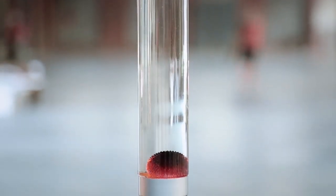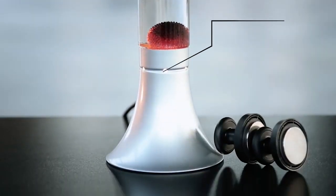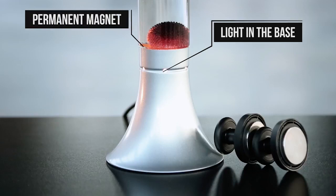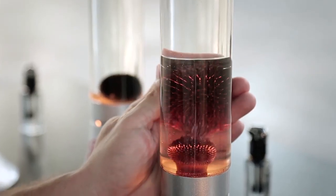This is the Illumination. It has light in the base that really brings out the vibrant color of the ferrofluid, and a permanent magnet at the bottom that keeps the ferrofluid magnetized and spiky.